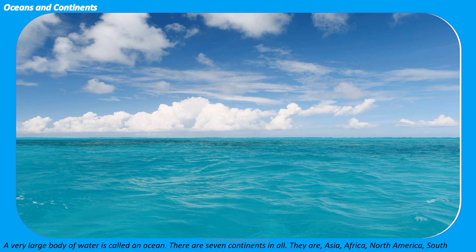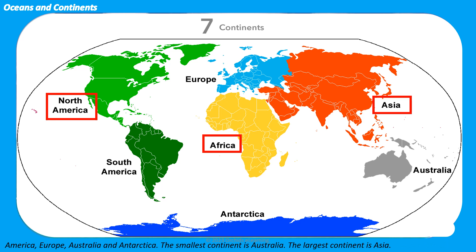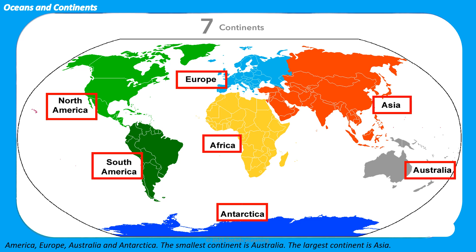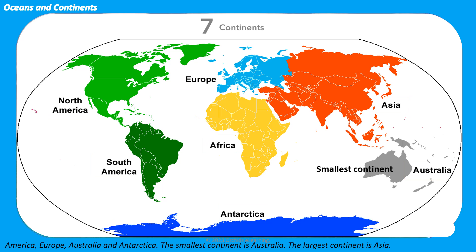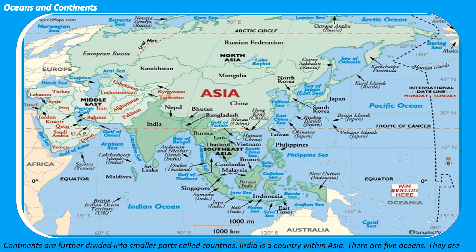A very large body of water is called an ocean. There are seven continents in all. They are Asia, Africa, North America, South America, Europe, Australia, and Antarctica. The smallest continent is Australia and the largest continent is Asia. Continents are further divided into smaller parts called countries.